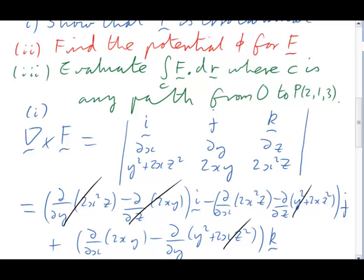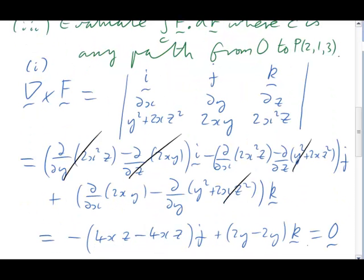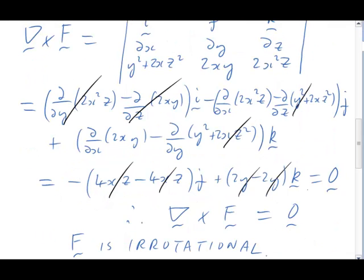For the rest, we will have to do the differentiations. They're not very hard, and you can quickly see that in both cases the coefficient of j and k both cancel. That means our answer is just the 0 vector. So the curl of this F is 0, and therefore F is irrotational. That's Part 1 finished.